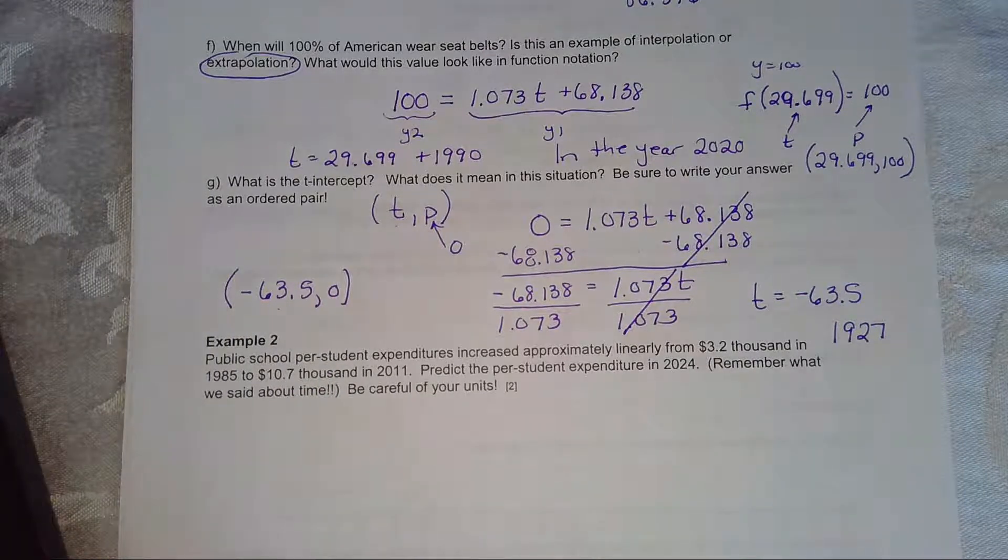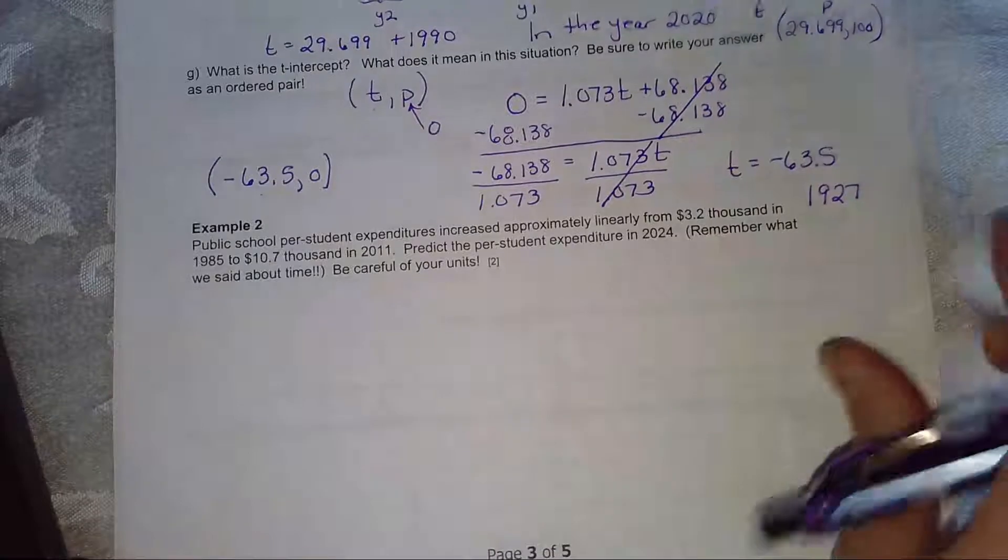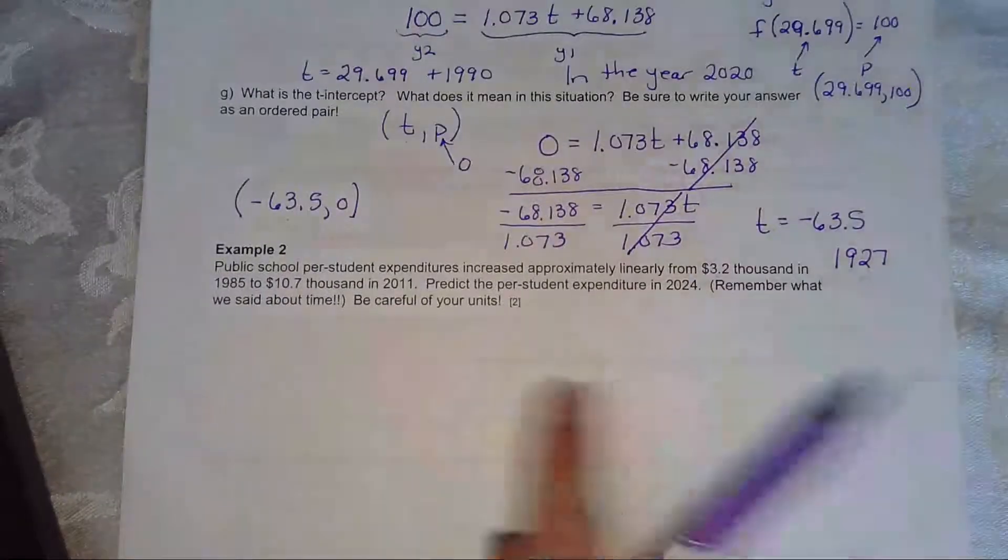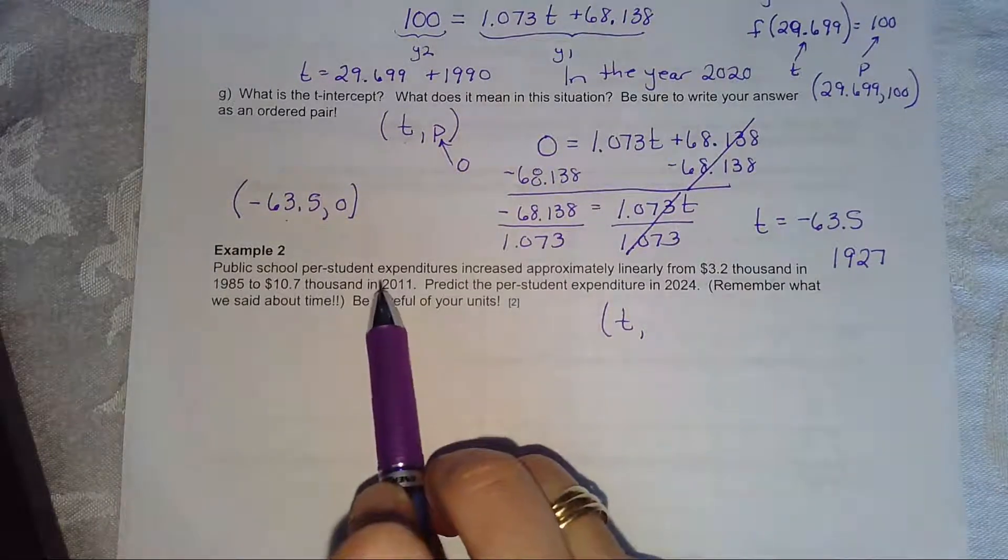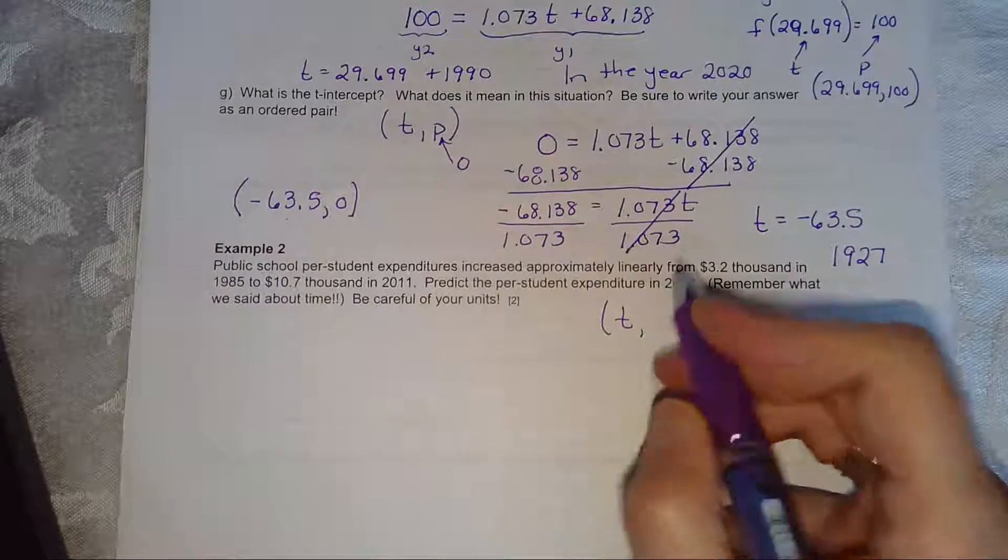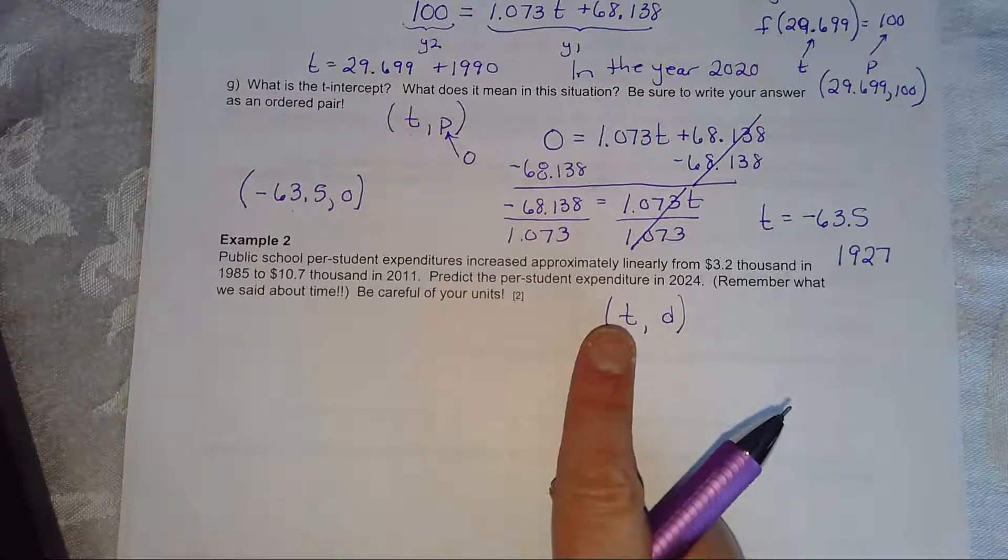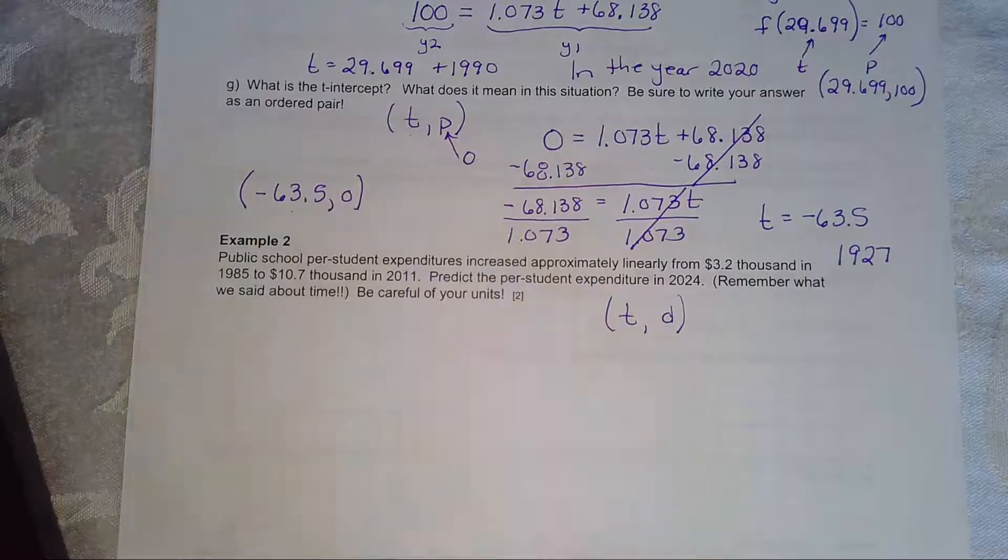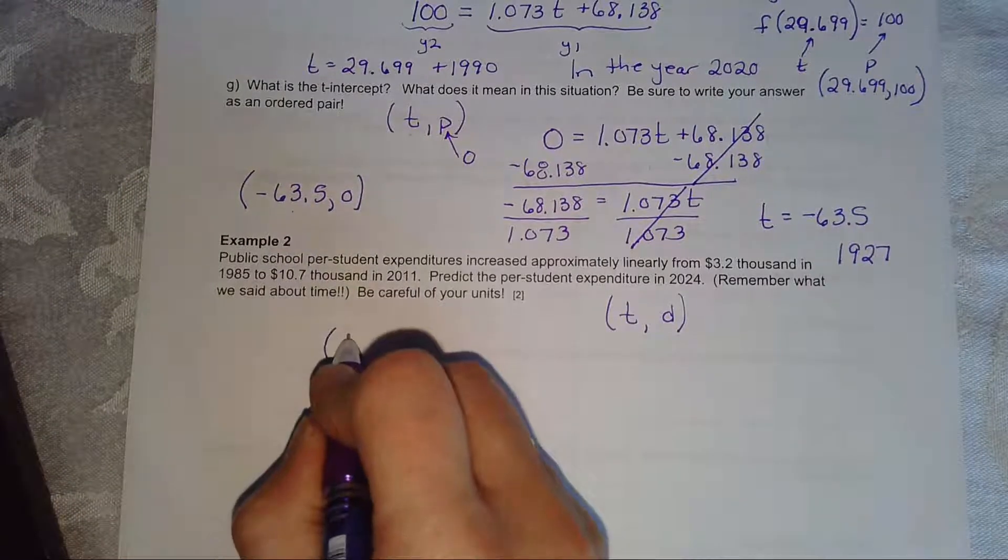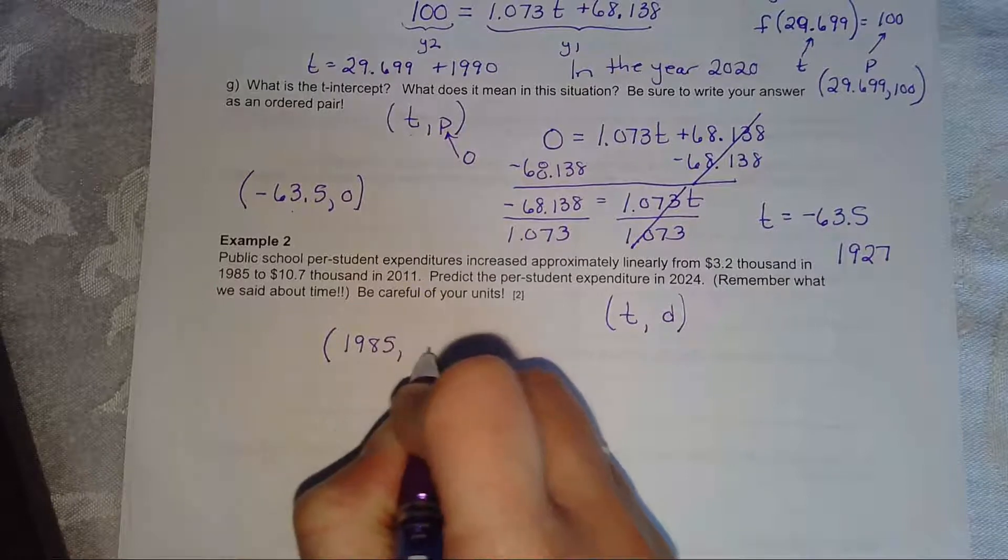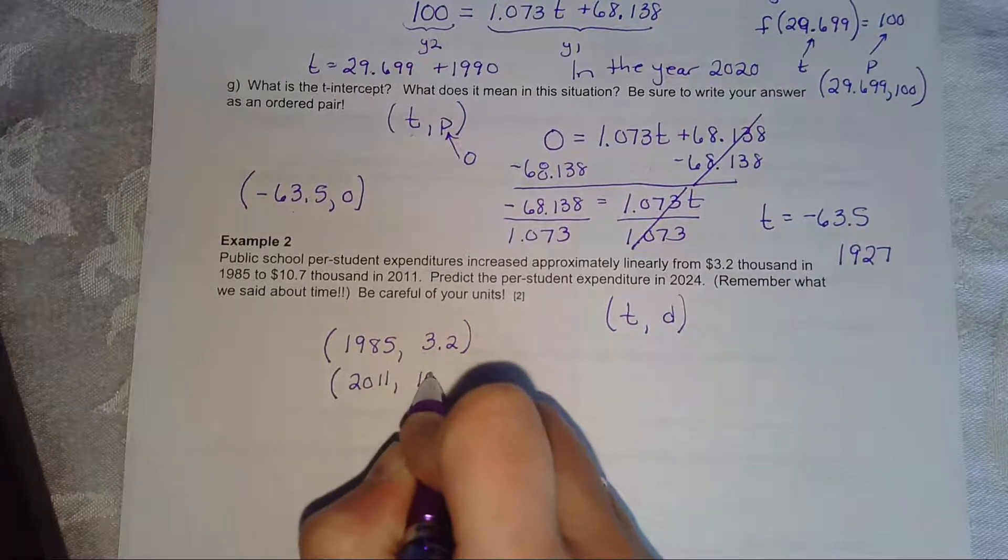So now you should be able to do two of the problems in MyMathLab. And the last problem looks something like this. So unlike the problems we've been doing, there's a few in MyMathLab that don't give you a time adjustment. But remember, time is always the input. And then in this case, it looks like expenditures or dollars, I'll make it D, is the output. So, read the scenario. You can turn the video off and read the problem. And then come back and let's find the two ordered pairs that we need. So the two ordered pairs look like in 1985, the expenditures were 3.2 thousand. And in 2011, the expenditures were 10.7 thousand.